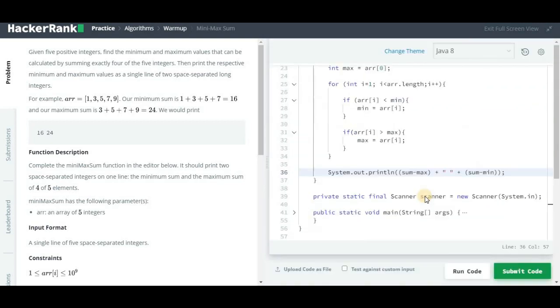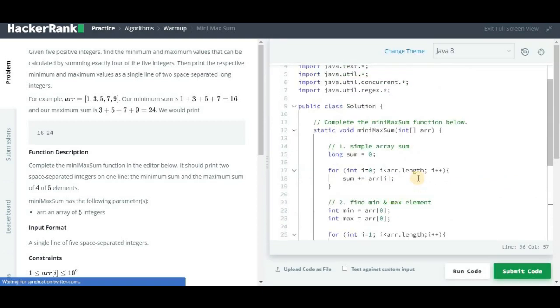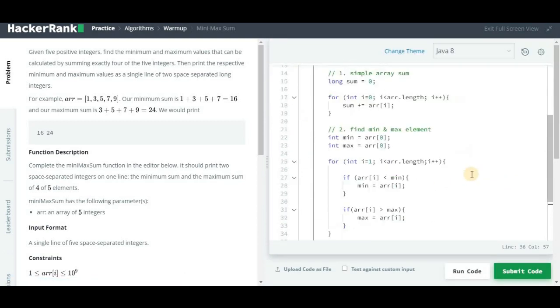So you can see all test cases got passed. But here you can see we are iterating the array two times. Instead of it, can we just remove it from here and paste it here and just remove this?